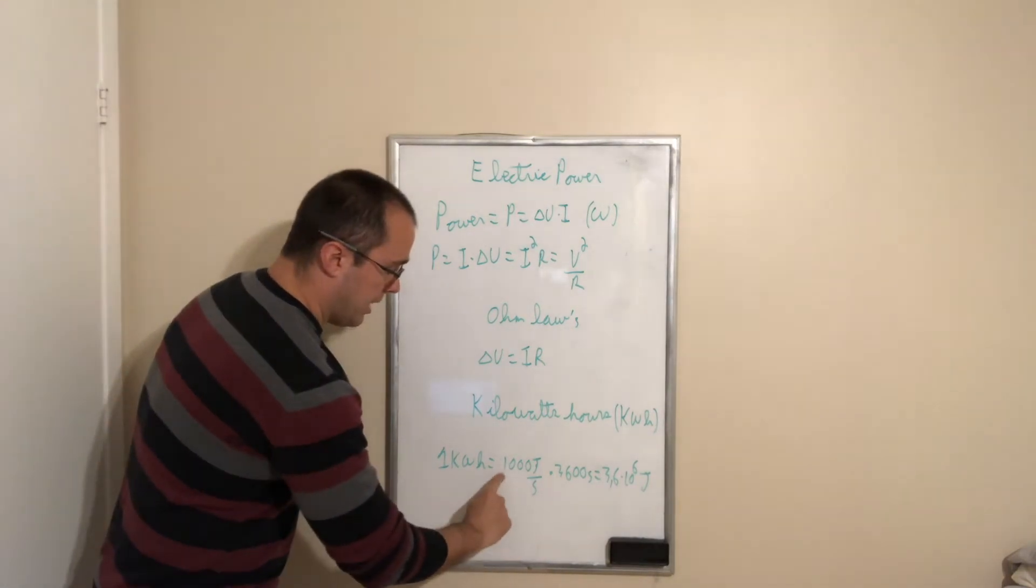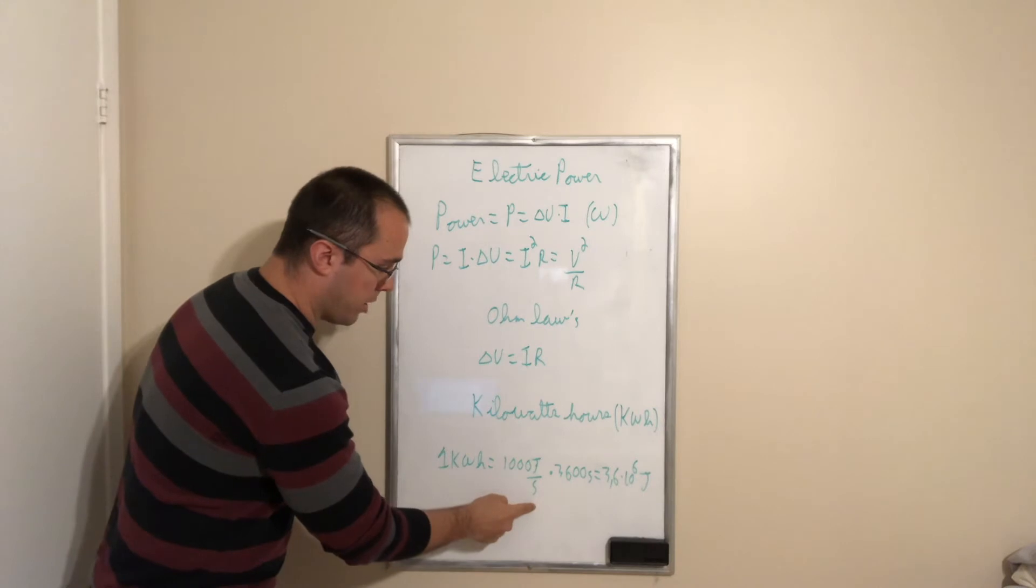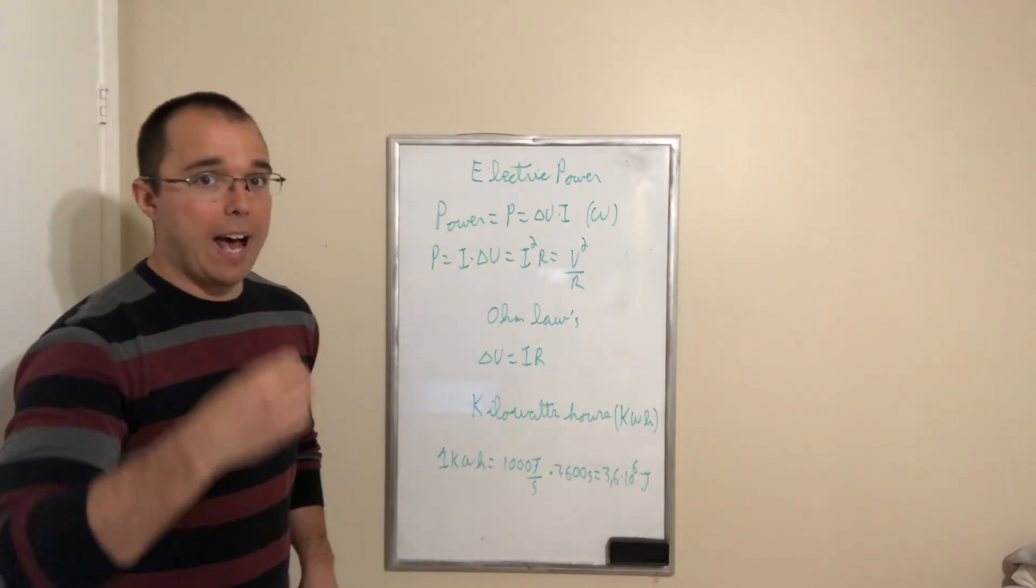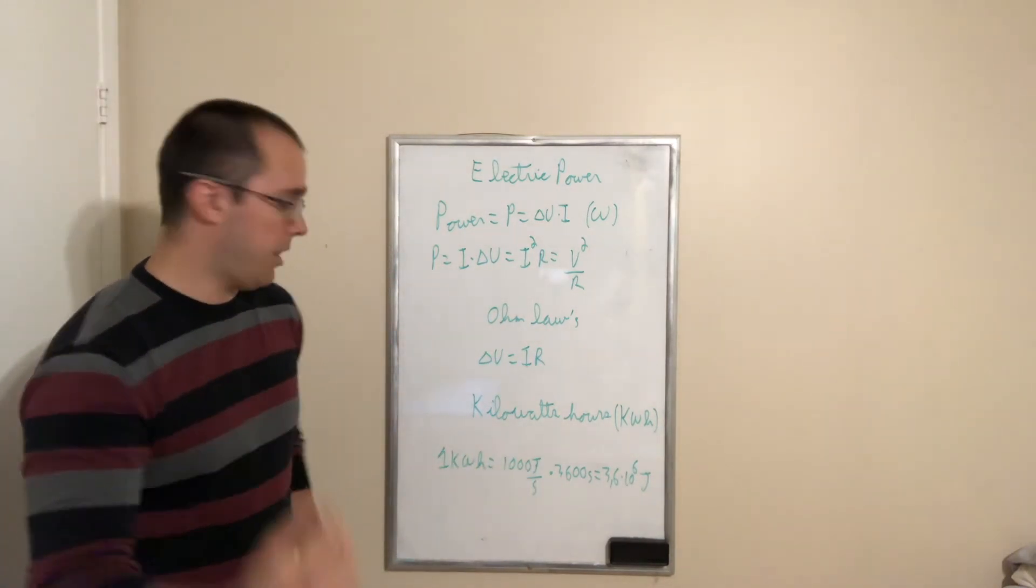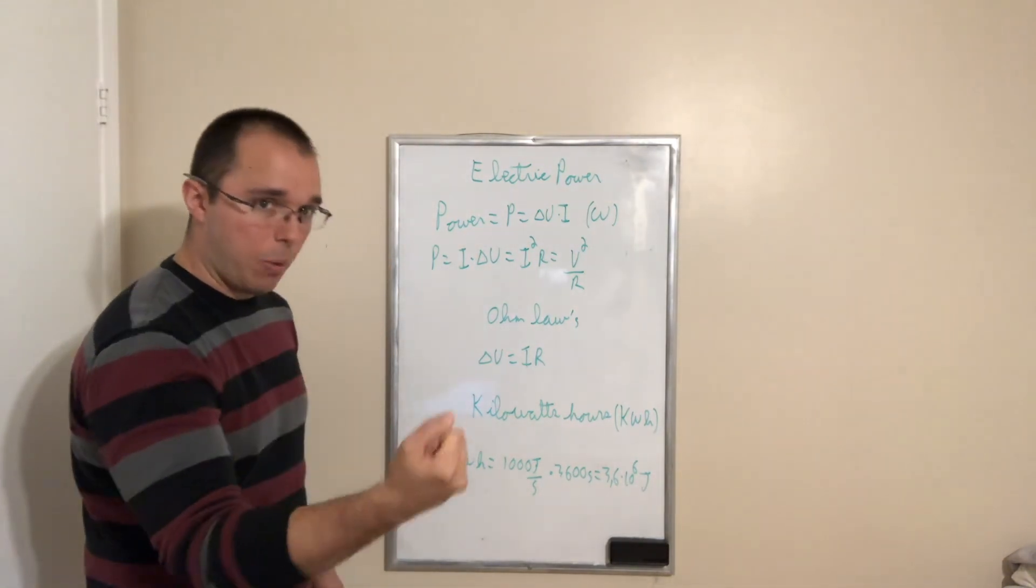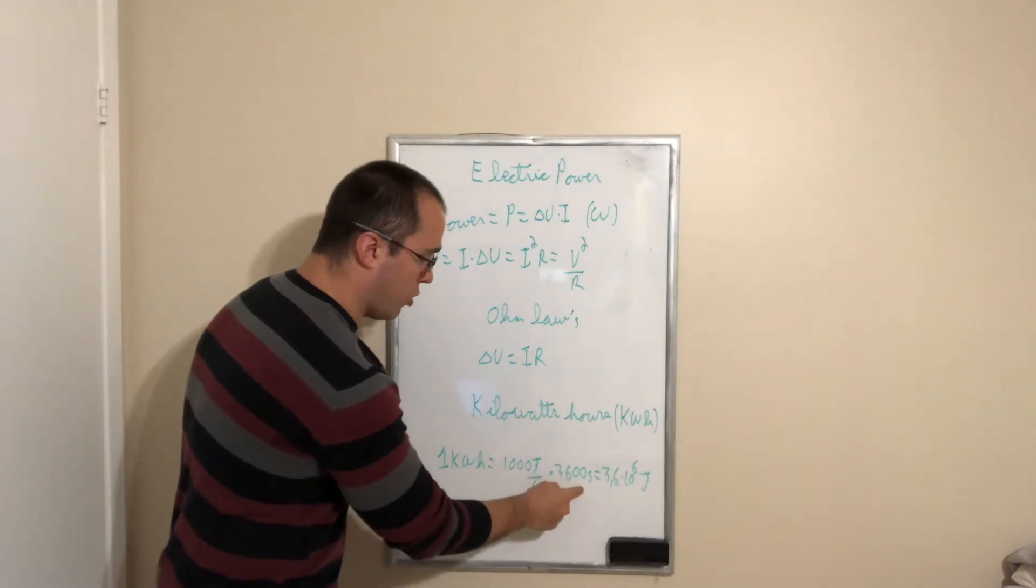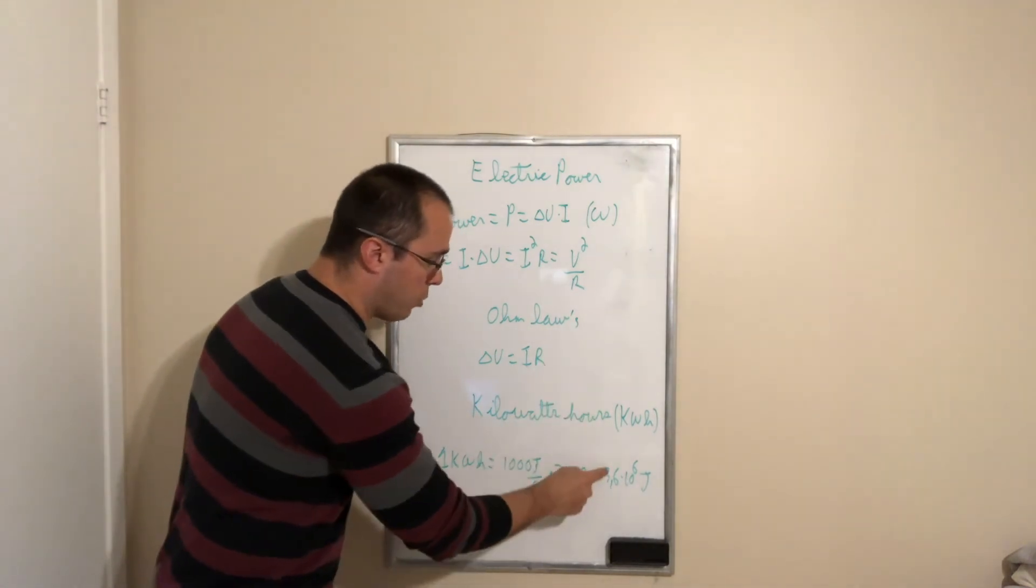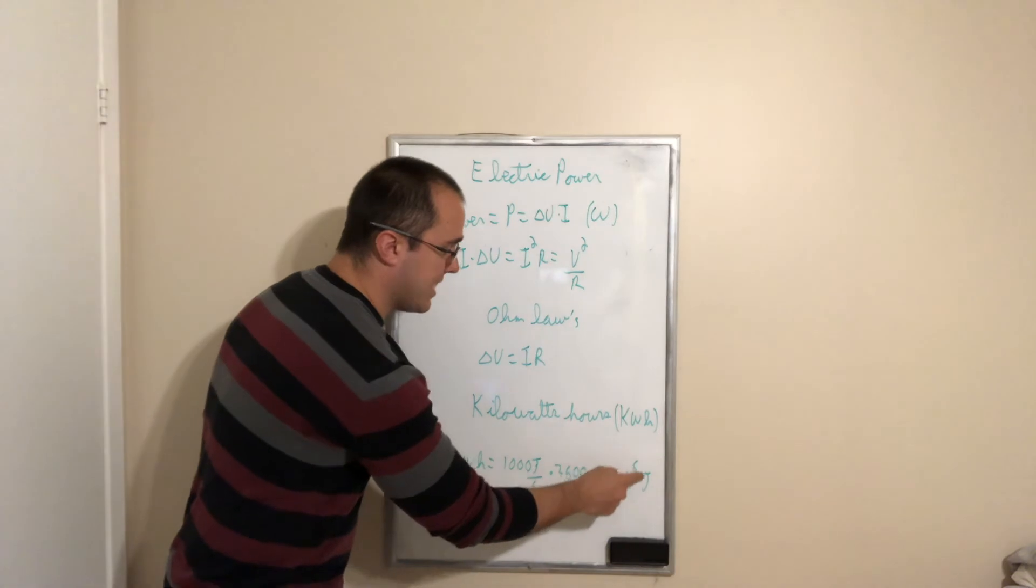One thousand watts is one thousand joules per second. And in one hour, we have 3,600 seconds. So if you want to find the amount of joules that is consumed in one kilowatt hour, it's a thousand multiplied by 3,600 seconds. And we get 3.6 multiplied by 10 power 6 joules.